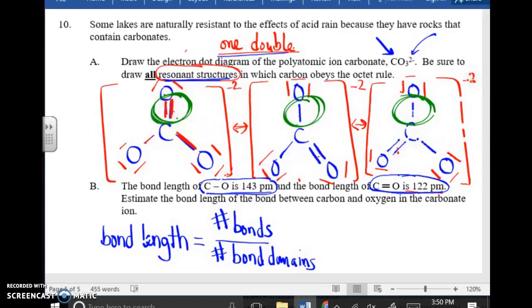The actual bond length is the number of bonds divided by the number of bond domains. So notice, in any of these molecules, there are 1, 2, 3 bonding domains. However, there are 1, 2, 3, 4 bonds distributed over that. So it's not a single bond. It's not a double bond. It's a 1.333 bond. Meaning, it's longer than a double bond. However, it is shorter than, I'll put it this way. It is longer than a double bond. But it's going to be shorter than a single bond. Now to the question.